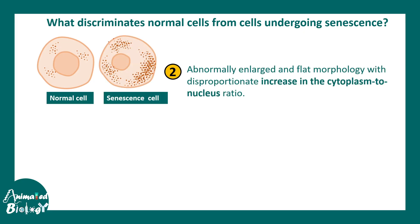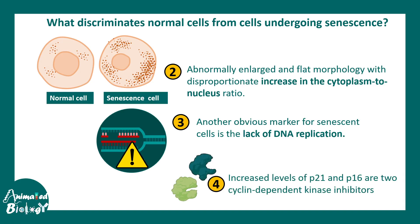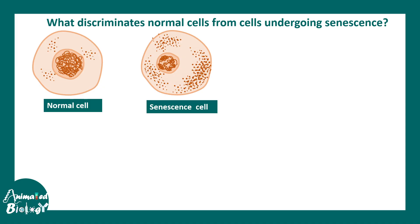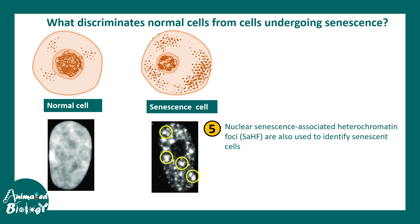There are many criteria that discriminate senescent cells from normal cells. There are morphological changes: senescent cells have an abnormally large cytoplasm with an increased cytoplasm-to-nucleus ratio, and they are also flattened in appearance. Another obvious marker is the lack of DNA replication, and increased levels of p21 or p16 protein, which prevent cyclin-CDK complexes, are also hallmark features of cellular senescence. In senescent cells the nuclei exhibit nuclear senescence-associated heterochromatin foci, where chromatin is condensed in a distinct way.